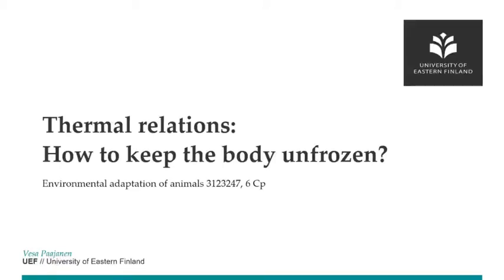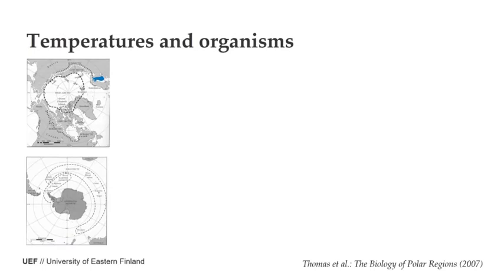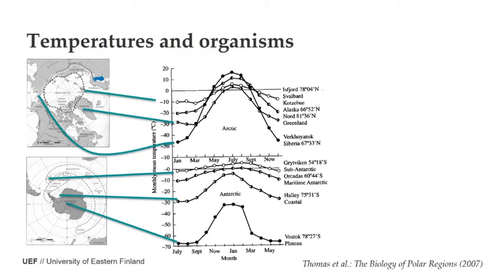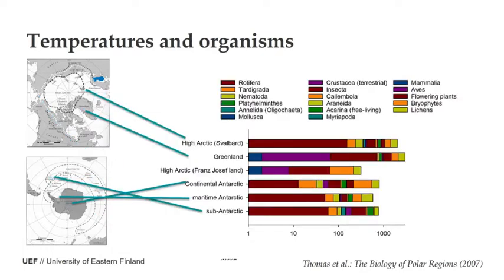Welcome to this lecture on environmental adaptation of animals. We will start to think about what happens to ectothermic animals when the environment is frozen — how they can keep their body unfrozen when the body temperature is below zero. We have places like the Arctic and Antarctic where the temperature hardly ever rises above zero degrees Celsius, and there are about 1,000 species living even on continental Antarctica, the majority of which are invertebrates and ectotherms.